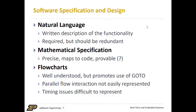Flowcharts are a well-understood and well-used form of software specification. One problem is that while flowcharts are intuitive and well-understood, they do promote the use of go-to statements. Go-to statements, although technically there's nothing wrong with them, have a tendency to make code difficult to understand if you can randomly hop through the execution, and they're also subject to hidden bugs that can cause problems. Another problem with flowcharts is that parallel flow is just not easily represented, and likewise with timing issues. So we won't actually use flowcharts so much in real-time and embedded systems because you just can't represent timing issues very well.